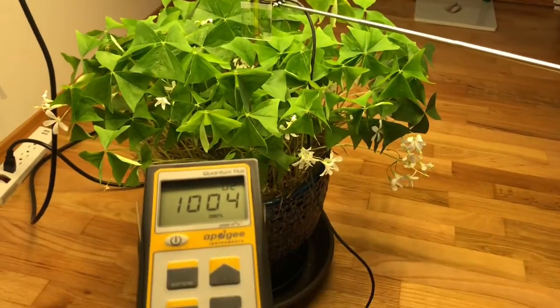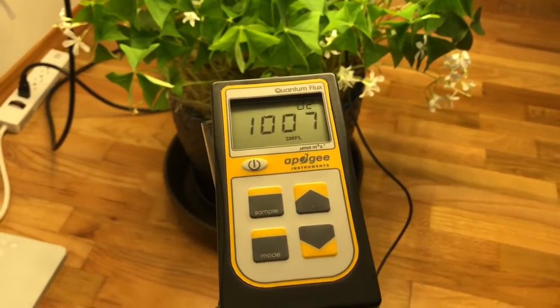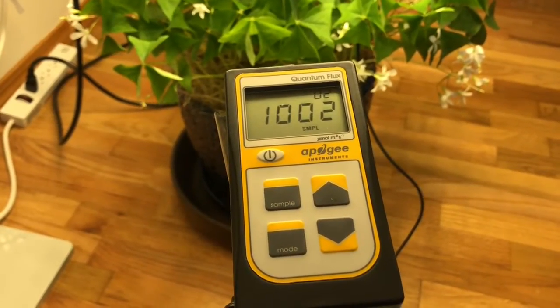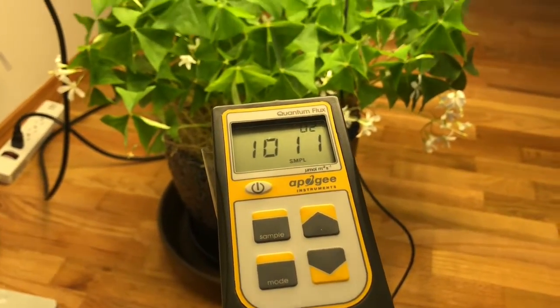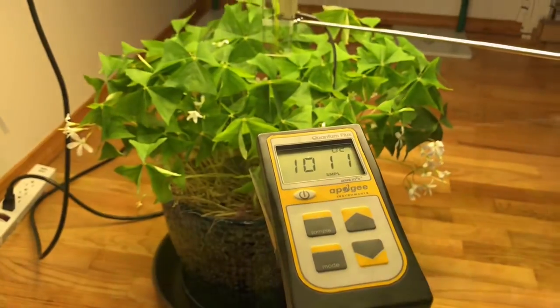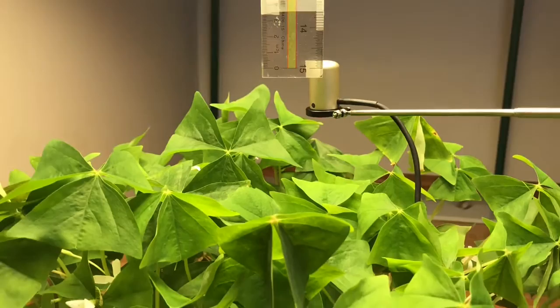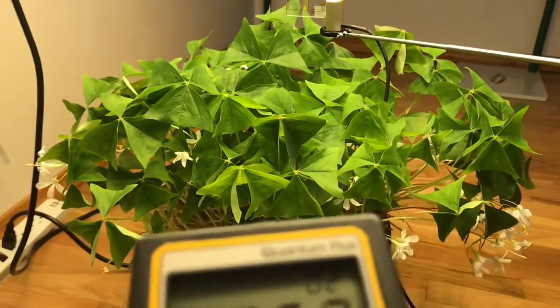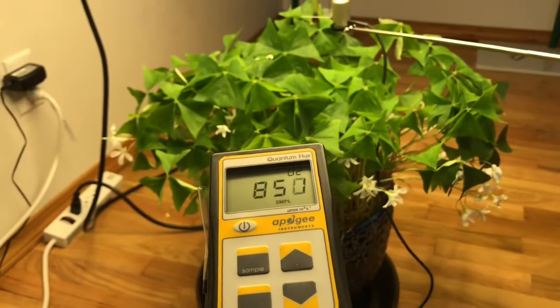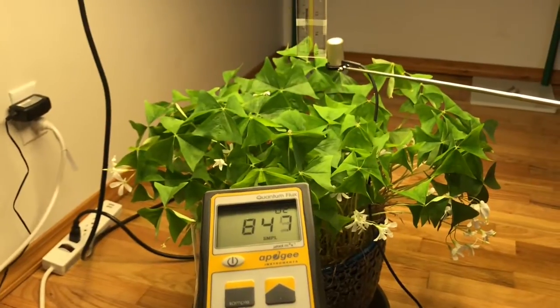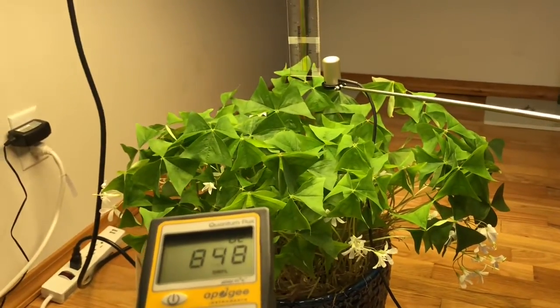PAR levels at 12 inches are 1,000 micromoles of PPFD. Now I'll raise the light up a little bit. I've raised the light up about three to four inches, and now the PAR level is showing at about 850. It is dimmed 10% because I wanted to be conservative with light levels.